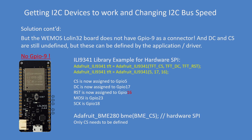Luckily, the libraries enable you to assign pins to chip select, data command, and reset. Here's an Adafruit ILI9341 example where that's being done. I've assigned chip select to GPIO 5, data command to pin 17, reset to pin 16, MOSI is already defined for me on pin 23, and clock is on GPIO 18. So now I've got all my data lines defined and I know how to connect everything.